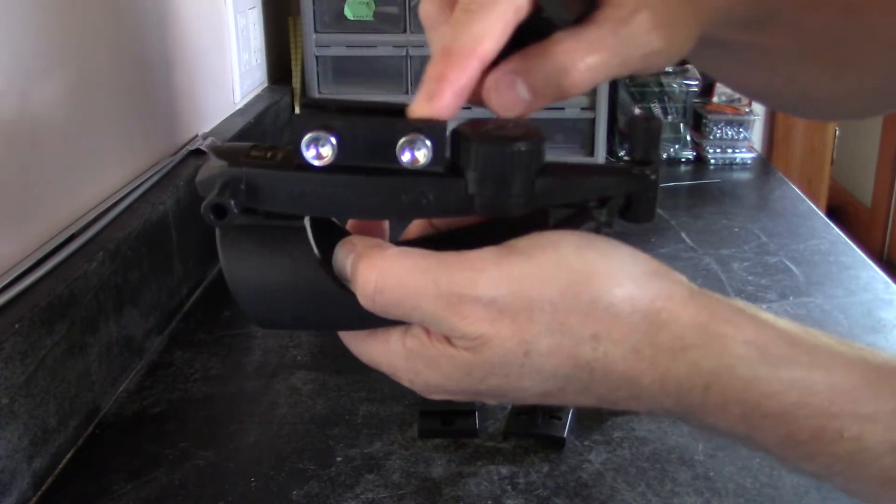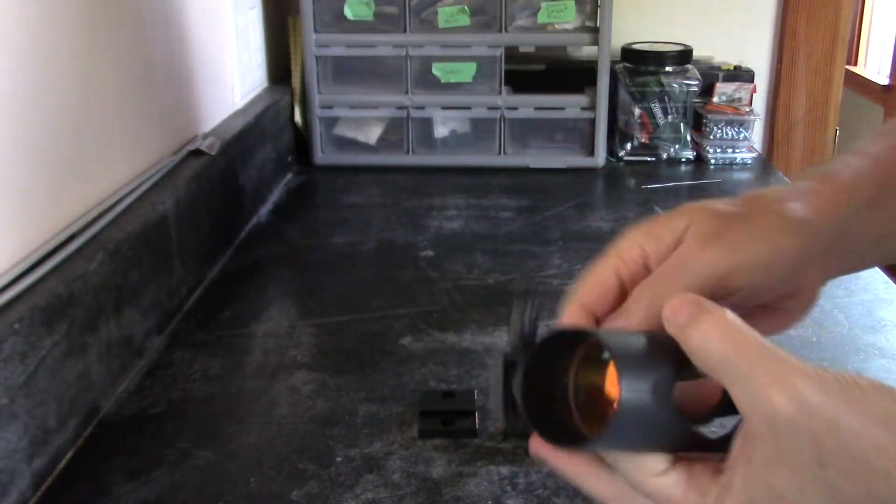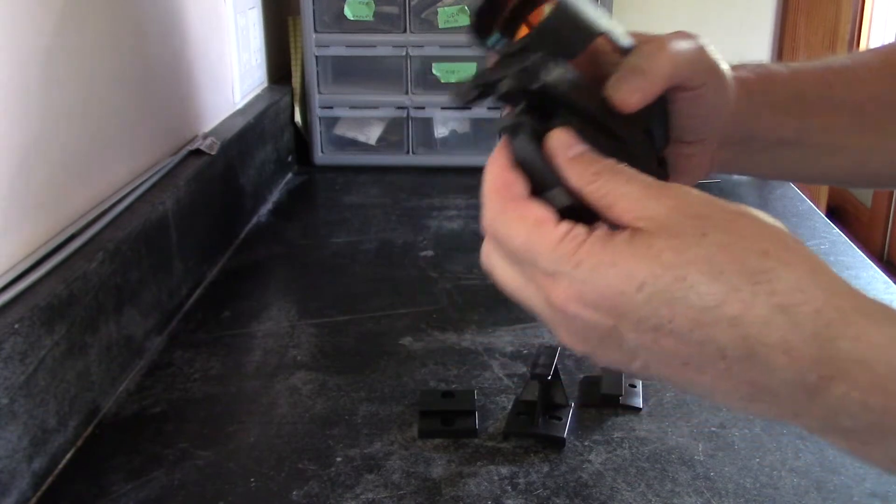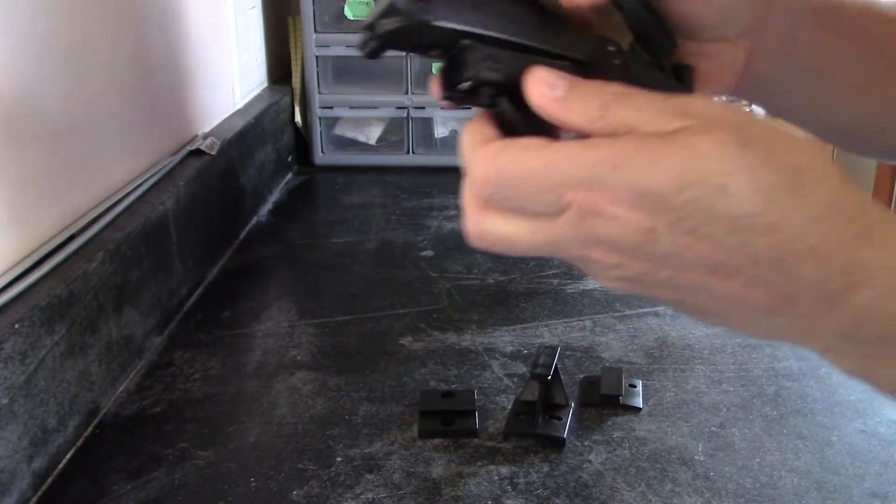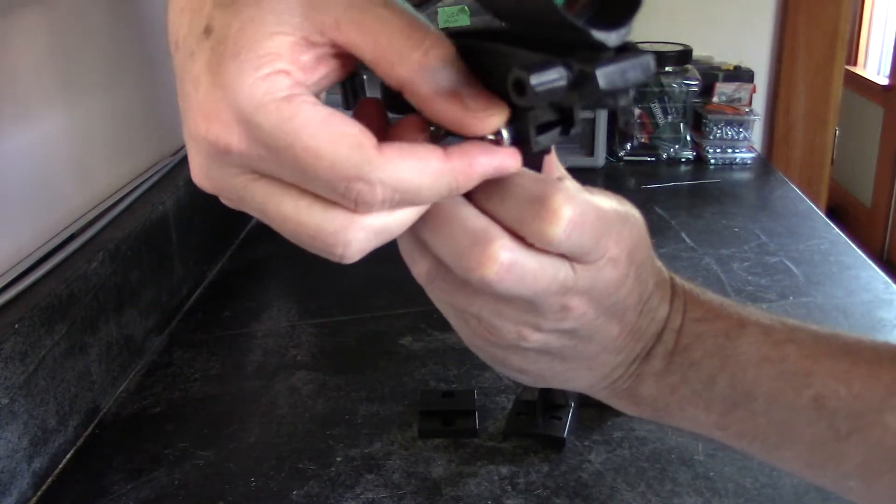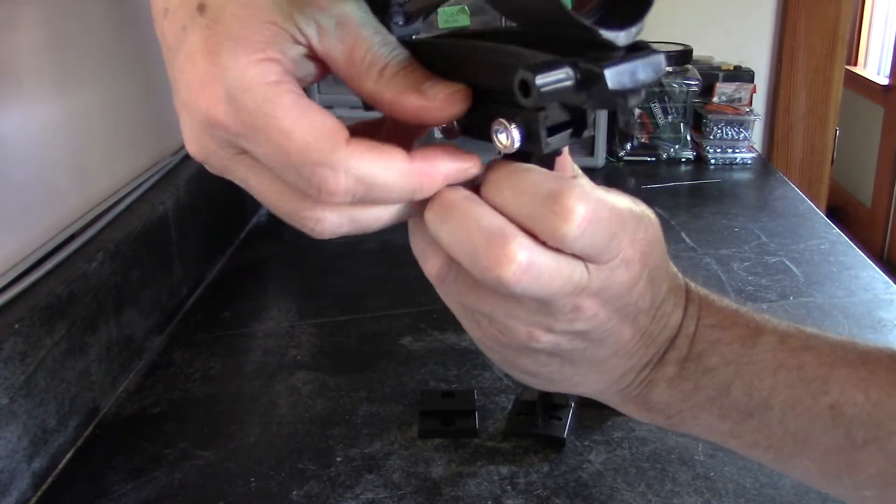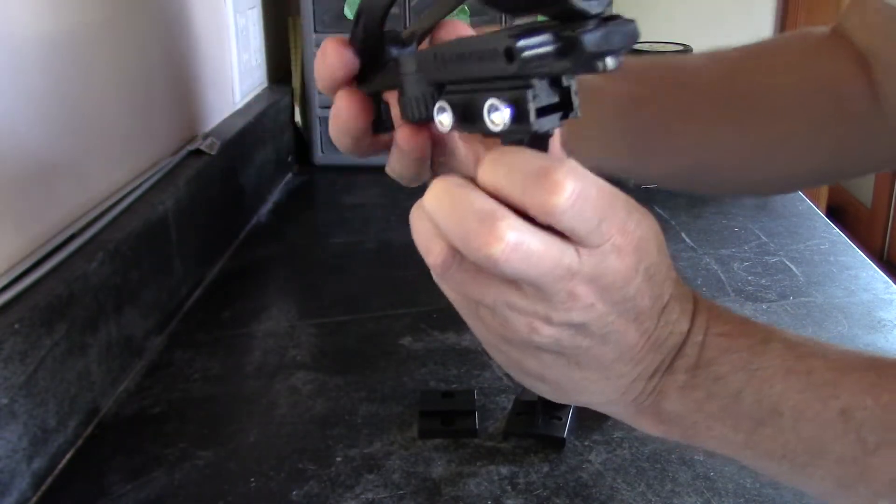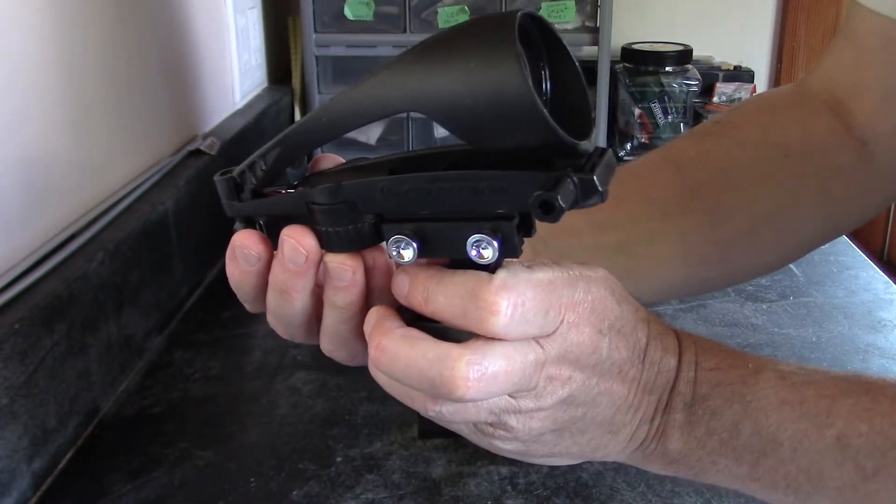Each of these mounts will work in this universal bracket right here. So once you have one of these mounts aligned to your scope, just slide it forward and then just tighten this down like this. And that will secure it to your telescope.